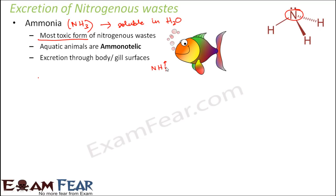In ammonotelic animals there is no role of kidneys — they do not have any specialized organ called the kidney. All excretion happens through the body surface or through the gill surface. The next nitrogenous waste is urea.